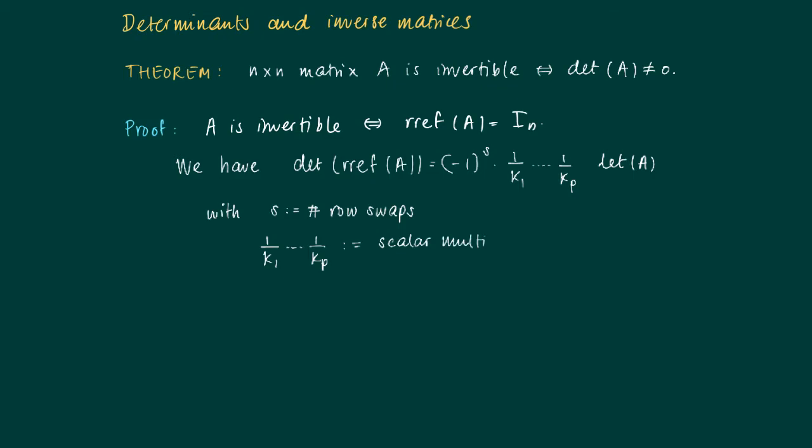If we multiply by k times a row, then what we get is k times the determinant of the new matrix. So these are actually the things that have an impact in Gauss-Jordan elimination steps.